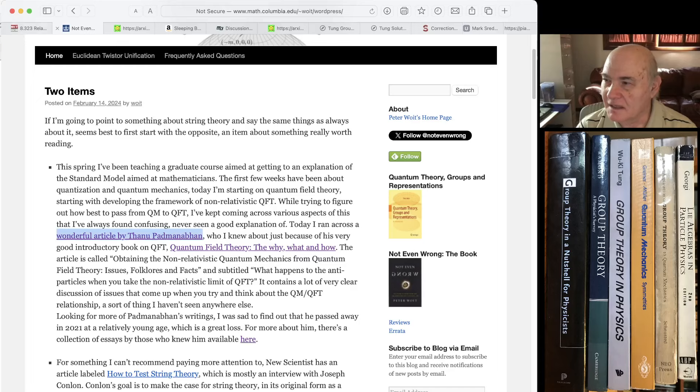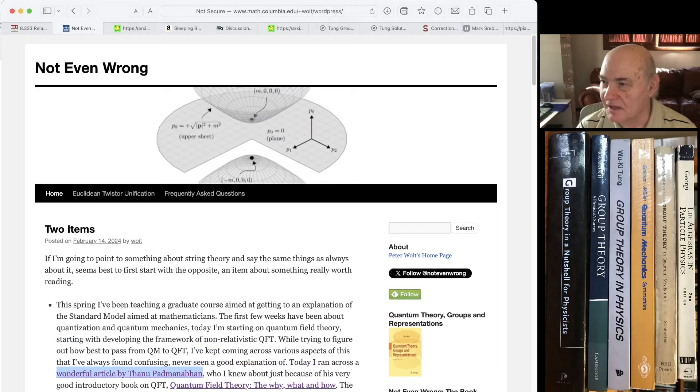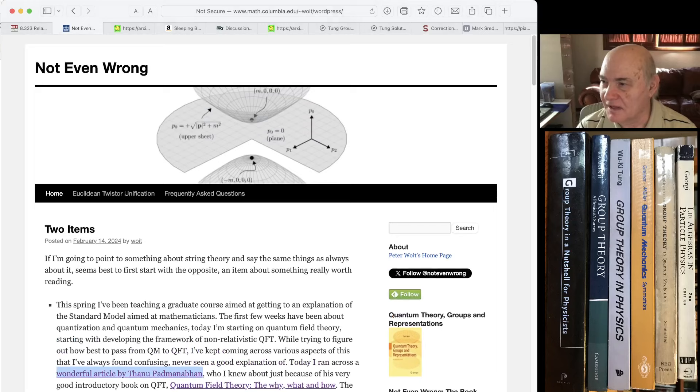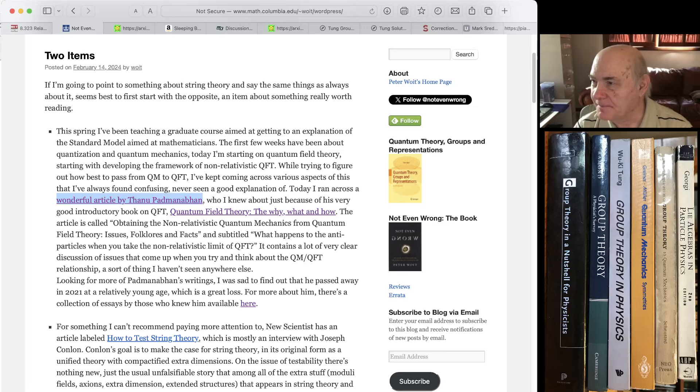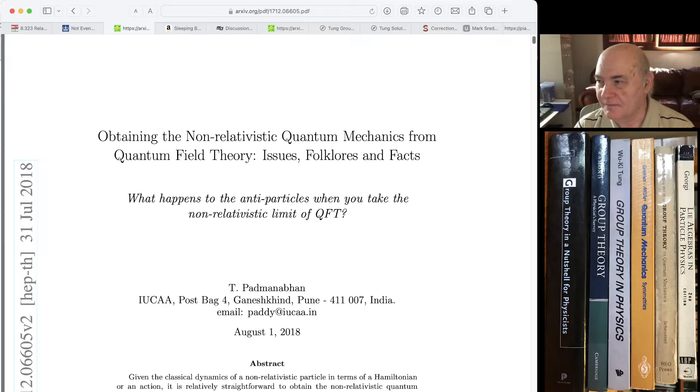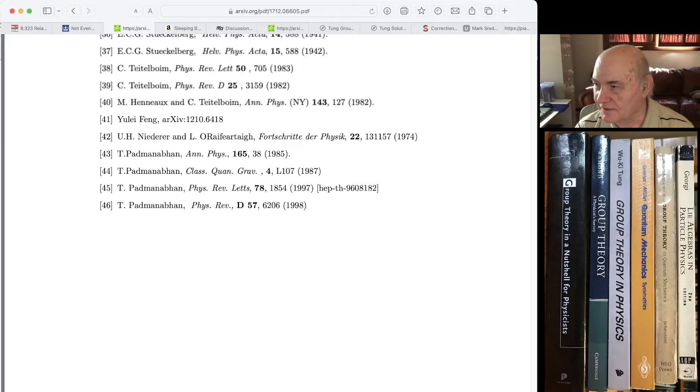Now, a lot of things I find, like I follow a blog, this is the Not Even Wrong blog by Woit, and he started mentioning this paper by this physicist who passed away a couple of years ago, an Indian physicist, I'm not going to attempt to pronounce his full name. So I looked at this paper, and it's not that hard a paper, but it's a very interesting paper on the difficulty of getting non-relativistic quantum mechanics from quantum field theory.